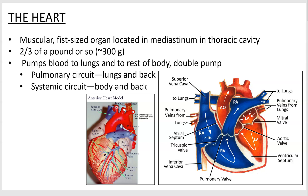First off, notice that there are two separate circuits — two separate sides to the heart. There's the right side in blue, with the right atrium on top and the right ventricle below. That's going to pump blood out to the lungs and back — that's called the pulmonary circuit, where the blood gets oxygenated. On the left side, the left atrium and left ventricle are part of the systemic circuit, which pumps blood out to the body tissues and back, where it drops off oxygen.